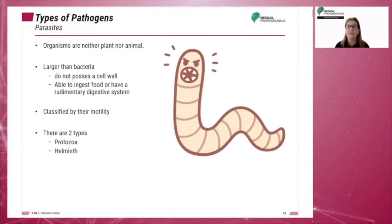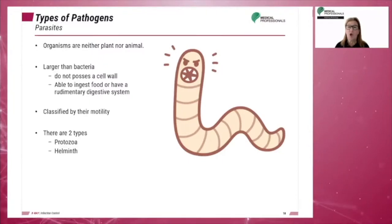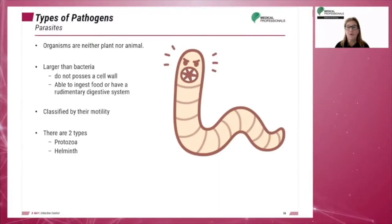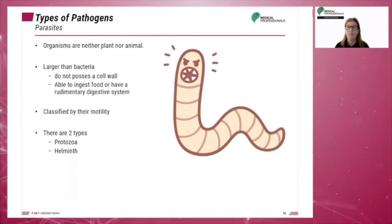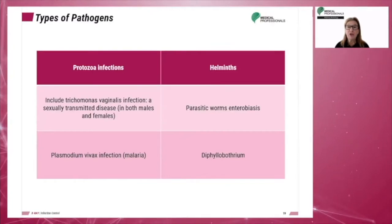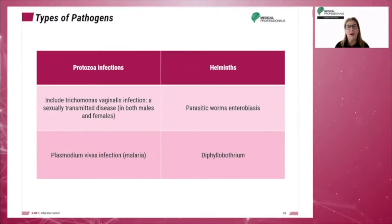Parasites are organisms that are neither plant nor animal. They are larger than bacteria and do not possess a cell wall. Parasites are able to ingest food and may have a rudimentary digestive system. They are classified by their motility. There are two types of parasites: protozoa and helminth. Common parasite infections are pinworms, tapeworms, malaria, and trichomonas vaginalis. Protozoa infections include trichomonas vaginalis, which is a sexually transmitted disease that can occur in both males and females, and plasmodium vivax infection, which can cause a form of malaria.